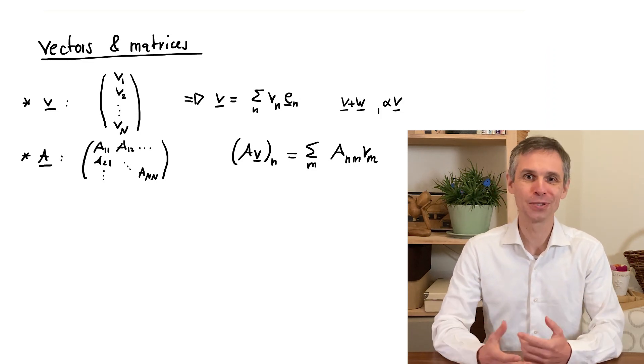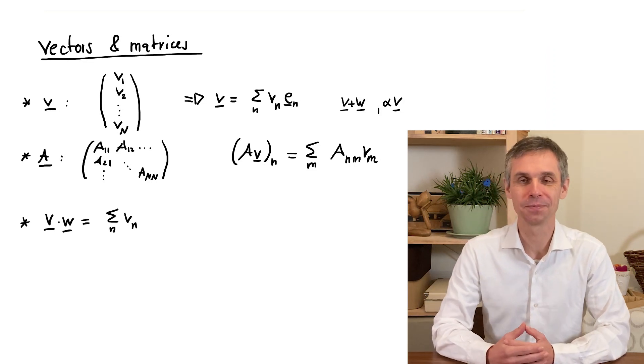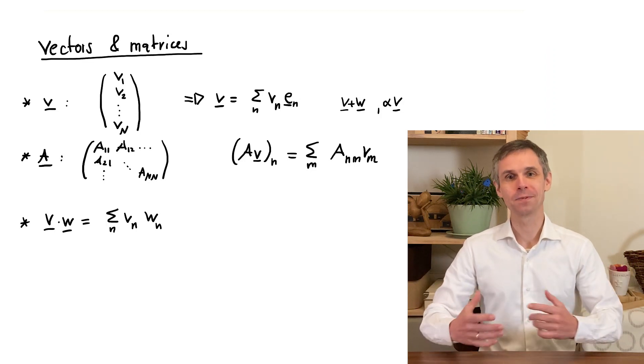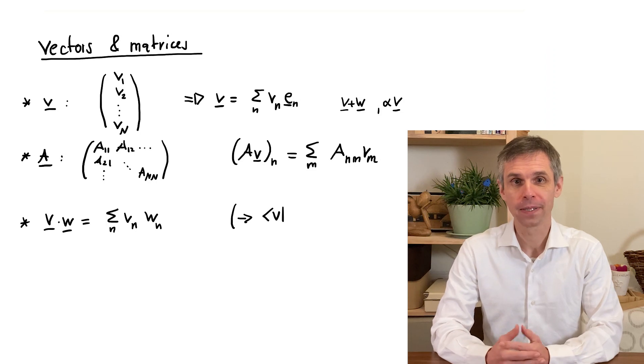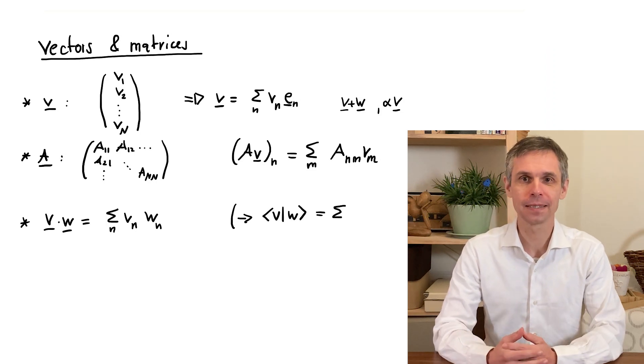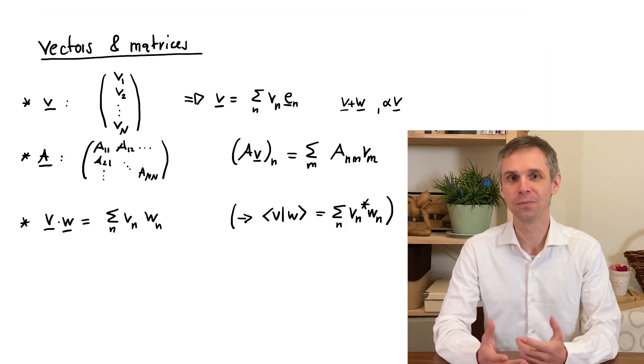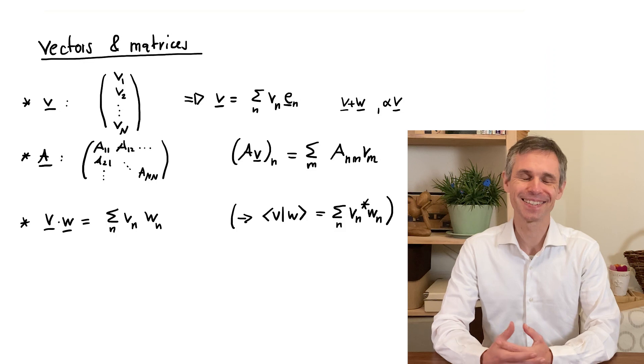And we will also encounter products between two vectors, very similar to the familiar dot product. Such rules become applicable to quantum mechanics when we make some suitable adaptations by taking care of the complex numbers that can appear in such vectors, and reflecting this in a useful notation, the Dirac notation, which facilitates the calculations.